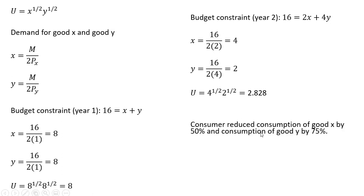Notice that the consumer reduced consumption of good X by 50% — from 8 to 4 — and consumption of good Y fell by even more, from 8 to 2. The rationale is that the price of good Y became relatively more expensive: the price of good X doubled, but the price of good Y increased fourfold.